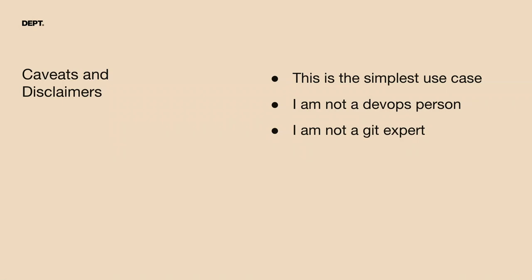A few caveats before I get started. This is the simplest use case. One advantage of Pantheon is its multi-dev functionality — when you push a new git branch to Pantheon, it can build out an entire new Pantheon environment for you using the contents of that branch. It's great for testing in isolation before pulling into the rest of your code. But here we're keeping it simple: a one-to-one match between our GitHub main branch and our Pantheon development environment.